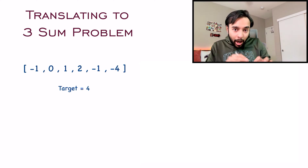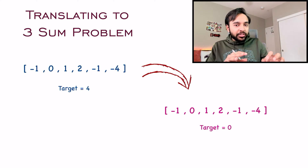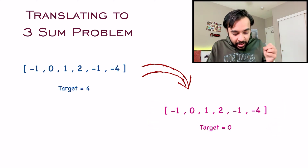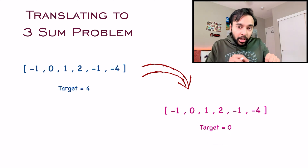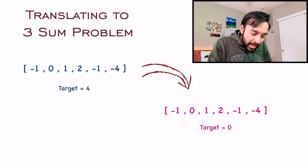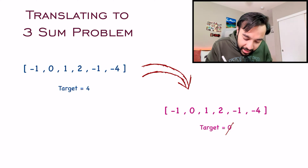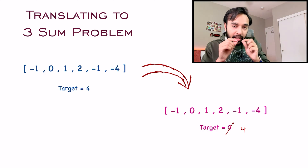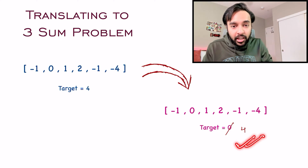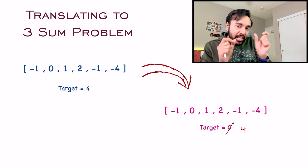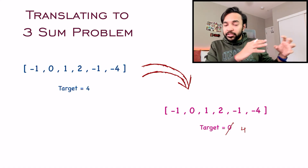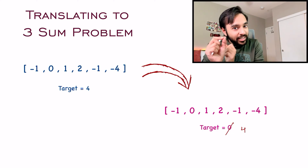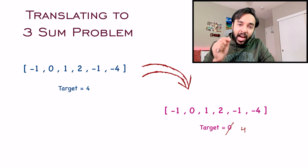Just doing a quick recap — in the original problem 3Sum, you were given an array and then you had to find triplets such that when you add them up, the target value becomes zero. Now, try to think about what is happening in this problem. Instead of the target value zero, you just have a target element that is four. So you can apply the same approach to find those triplets which are closest to this target value four. While going through the entire loop, just keep a track of the closest difference that you find, and once you have traversed your entire array, you can know the minimum difference and the sum of those three integers. That sum will be your resultant answer.